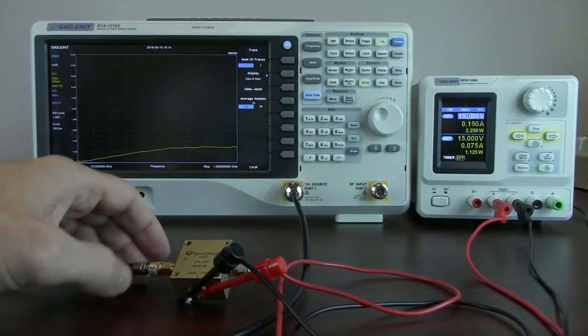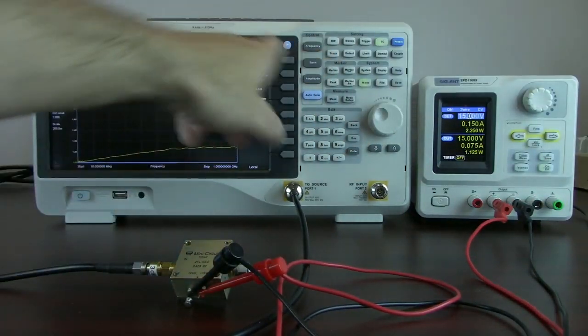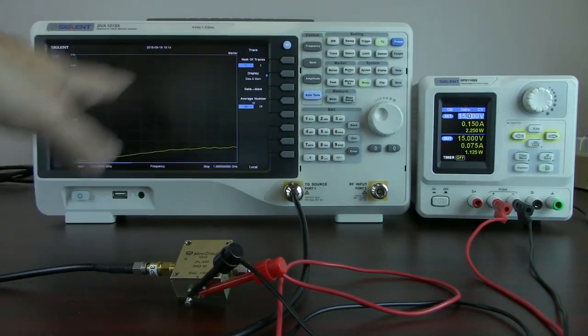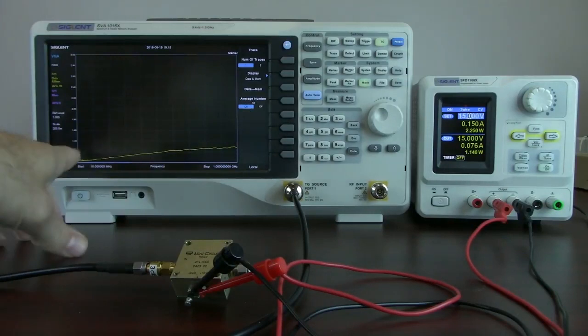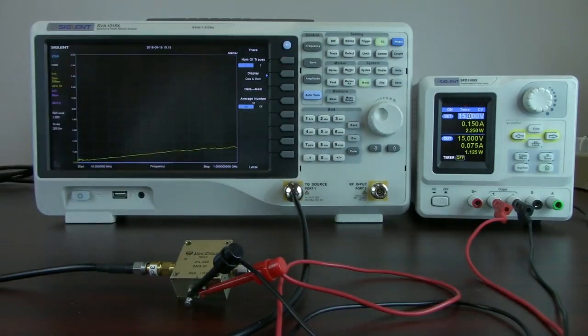By selecting trace, I can now pull in different trace values and show different traces on the display. I set the average number to 10, and so you can see we've got a nice curve here that's very close to what we see on the datasheet.